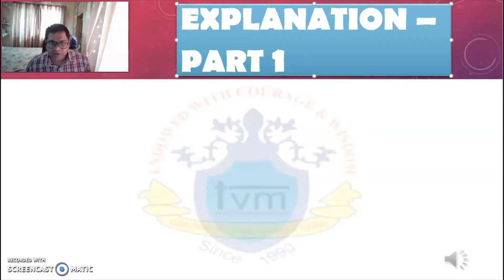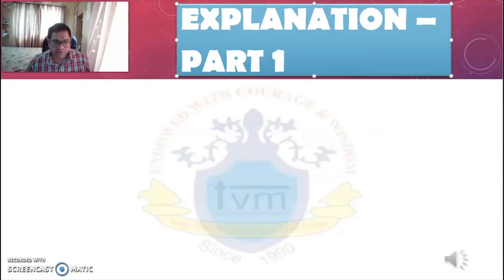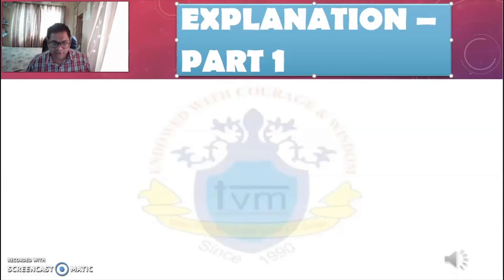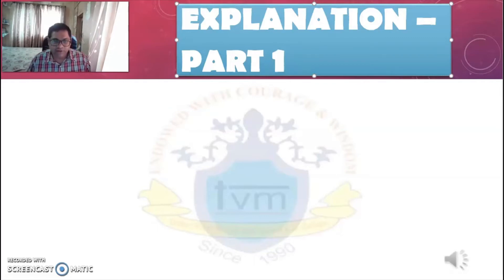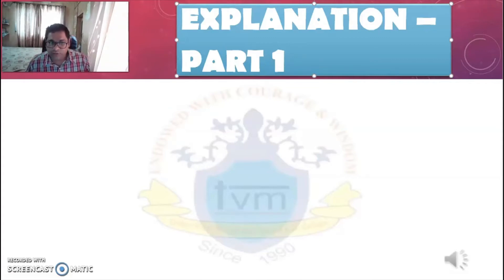Now we will watch the explanation of the first part of the lesson. In this first part, we will be learning about APJ Abdul Kalam and his three visions. Open your book to page number 40. We will be learning the first three paragraphs of the lesson — from the beginning up to 'if we are not free, no one will respect us.' So let's begin.